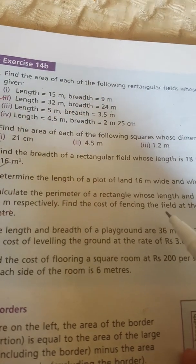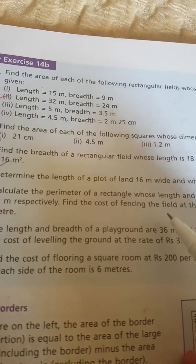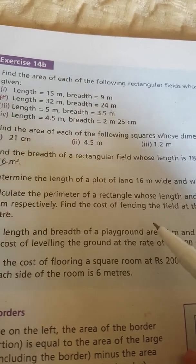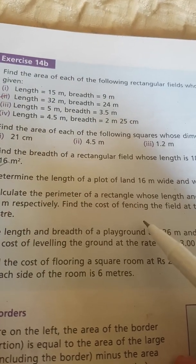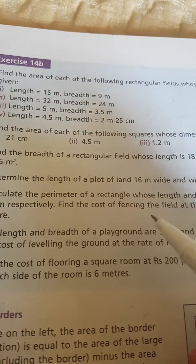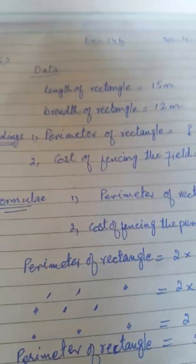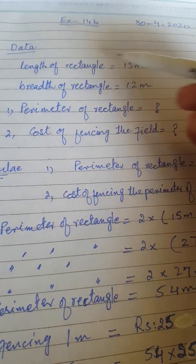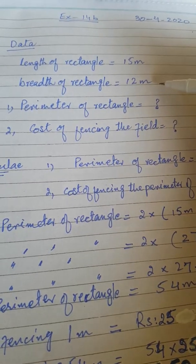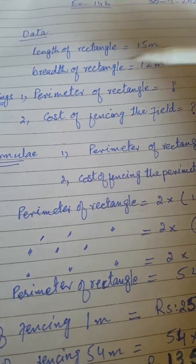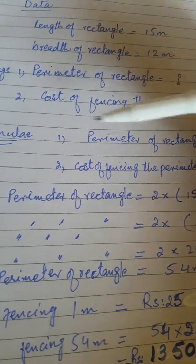The second finding is the cost of fencing the field, so you will do both parts. Length is given, breadth is given. First find out the perimeter, then find the cost of fencing. I have done this question for you — we will send the picture of this question. Length of rectangle is given, breadth of rectangle is given — this is the data, and the findings are: perimeter of rectangle and cost of fencing the field.